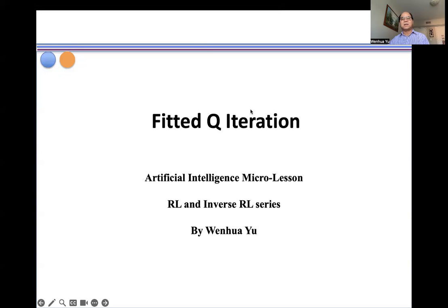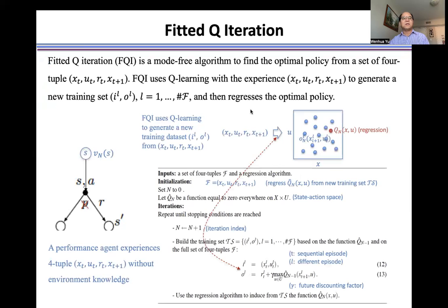Now, I introduce the Fitted Q Iteration. Fitted Q Iteration is a model-free algorithm to find the optimal policy from a set of four-tuple.